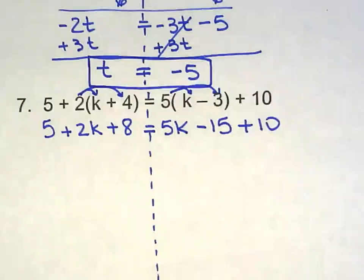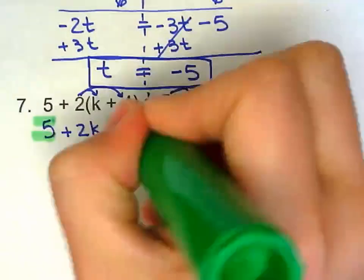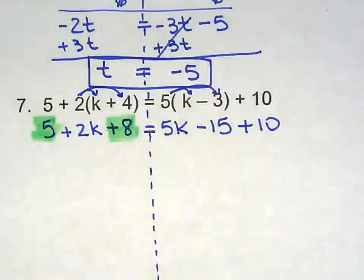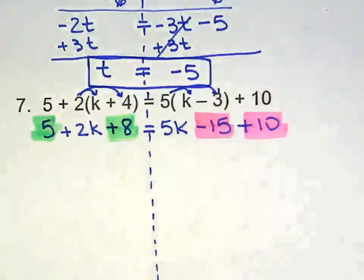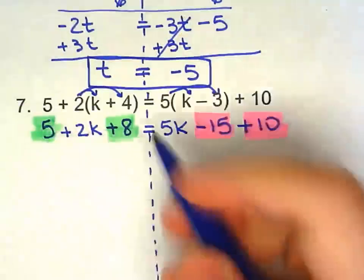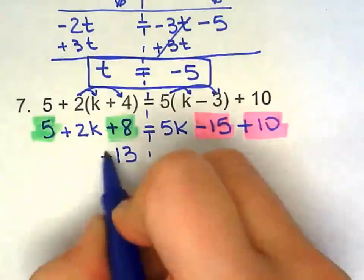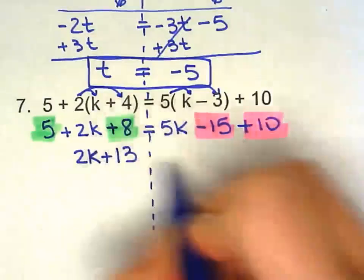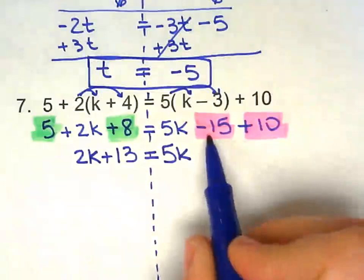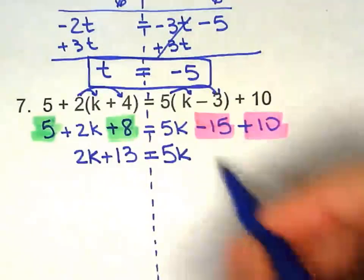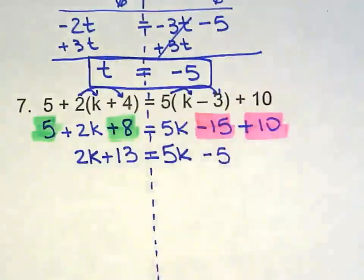Now I'm going to combine what's on the same side. So I'm going to combine 5 with 8. And I'm going to use a different color to combine what's on the other side. So 5 and 8, 13. Bring 2k down. Bring 5k down. Negative 15 plus 10 is negative 5.